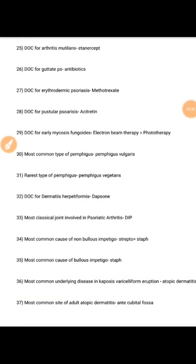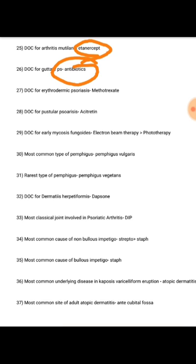Starting with the second part of dermatology — the most important one-liners, the juicy points from your notes which you must know before you attempt your NEET-PG examination. Question number 25: drug of choice for arthritis mutilans is etanercept, drug of choice for guttate psoriasis is antibiotics, drug of choice for erythrodermic psoriasis is methotrexate.